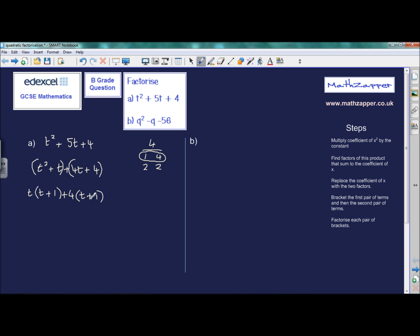Now, look at the contents of your brackets. If they are identical, that is a factor. So in this case, they are identical. t plus 1 is a factor of this particular quadratic expression. And the other factor, if t plus 1 is in both brackets, the remaining factor is made up of what's outside of the brackets. So the other factor is t plus 4.